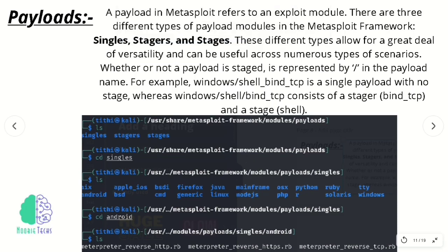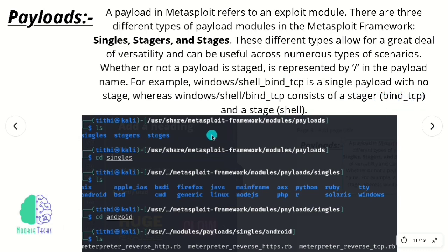Now comes the payload module, which you might be familiar with. This module is further subdivided into singles, stagers, and stages — these different types give great versatility. Payloads can be either common strings or raw instructions, but in the end they boil down into code that will be executed on a target machine. For example, you may have worked with bind_tcp, which attempts to establish a connection to a target machine on a given port. Singles, stagers, and stages have more detail that you can read from books.